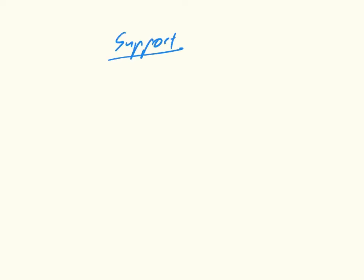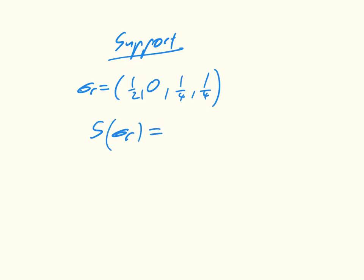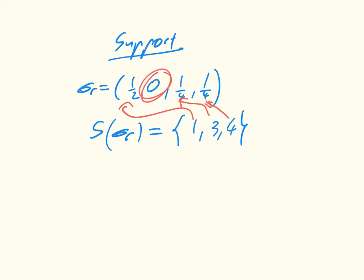We're starting off this video by defining something called a support. The support of a strategy — of some mixed strategy — is simply the set of pure strategies that are played with non-zero probabilities. For example, if we had σ_r = (1/2, 0, 1/4, 1/4), we would say that the support of σ_r is equal to {1, 3, 4}, because all the others are played with probability zero.